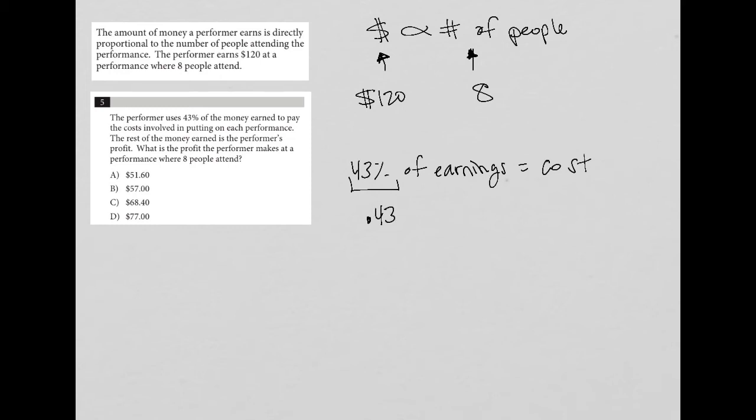The next part of this sentence or question says the rest of the money earned is the performer's profit. So the rest would be 57%. I'll just write that over here. 57% equals profit. So 43% equals cost, 57% equals profit.